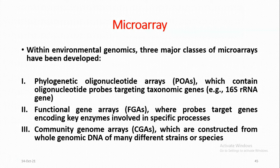Within environmental genomics, three major classes of microarrays have been developed: (1) Phylogenetic oligonucleotide arrays, which contain oligonucleotide probes targeting taxonomic genes, e.g., the 16S ribosomal RNA gene; (2) Functional gene arrays, where probes target genes encoding key enzymes involved in specific processes; and (3) Community genome arrays, which are constructed from whole genome DNA of many different strains or species.